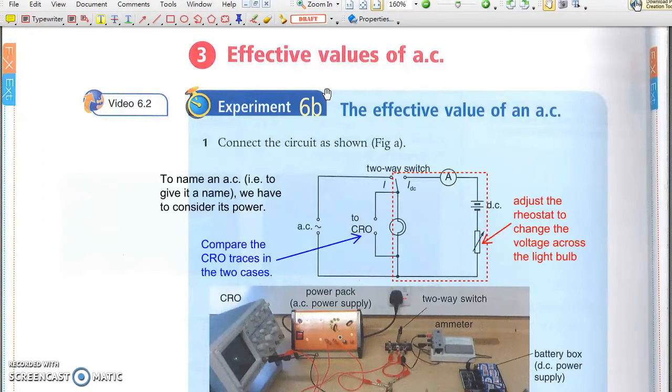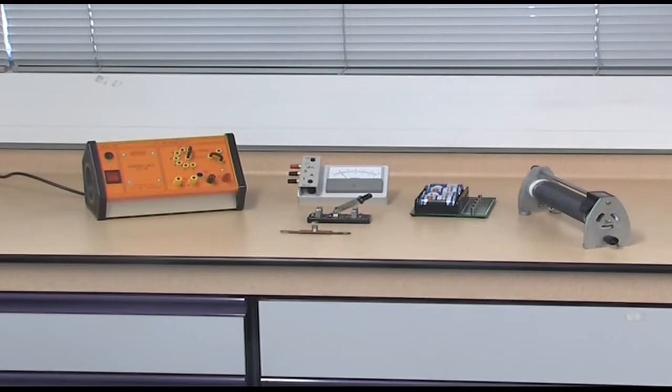Experiment 6b: the effective value of an AC. In this experiment, we will measure the effective value of an alternating current.